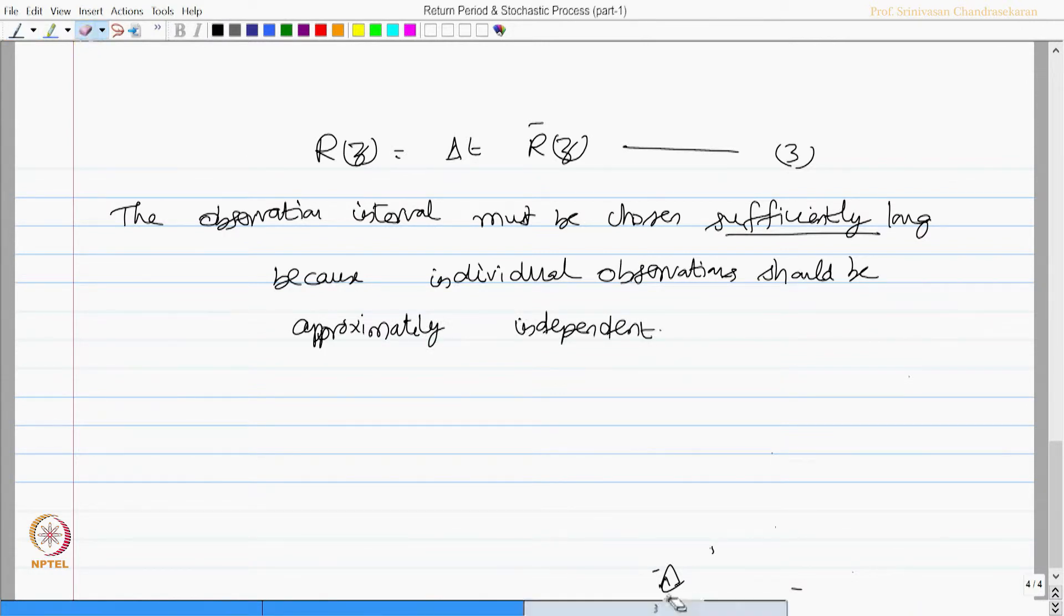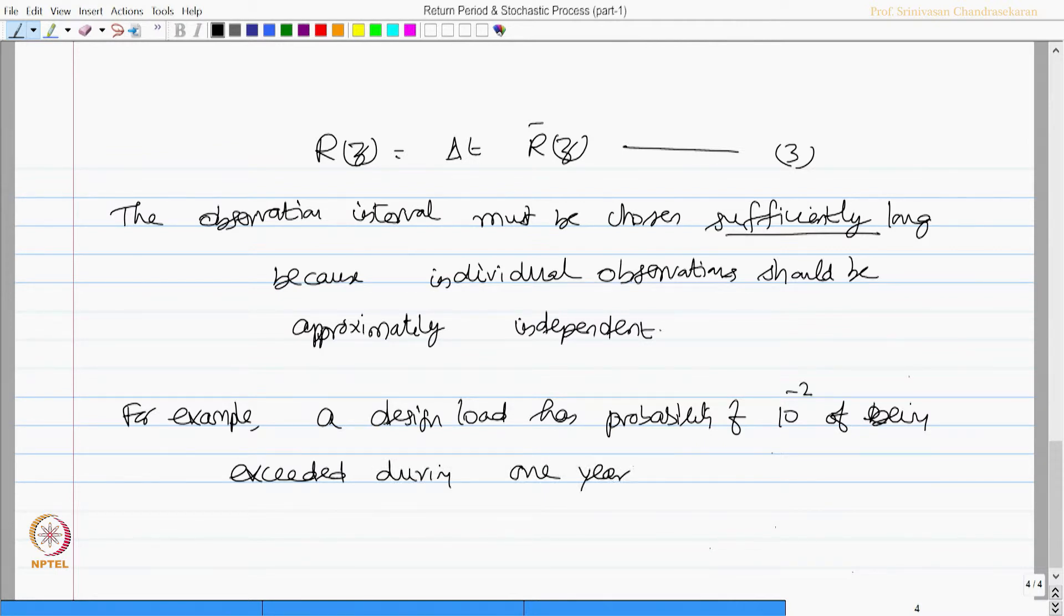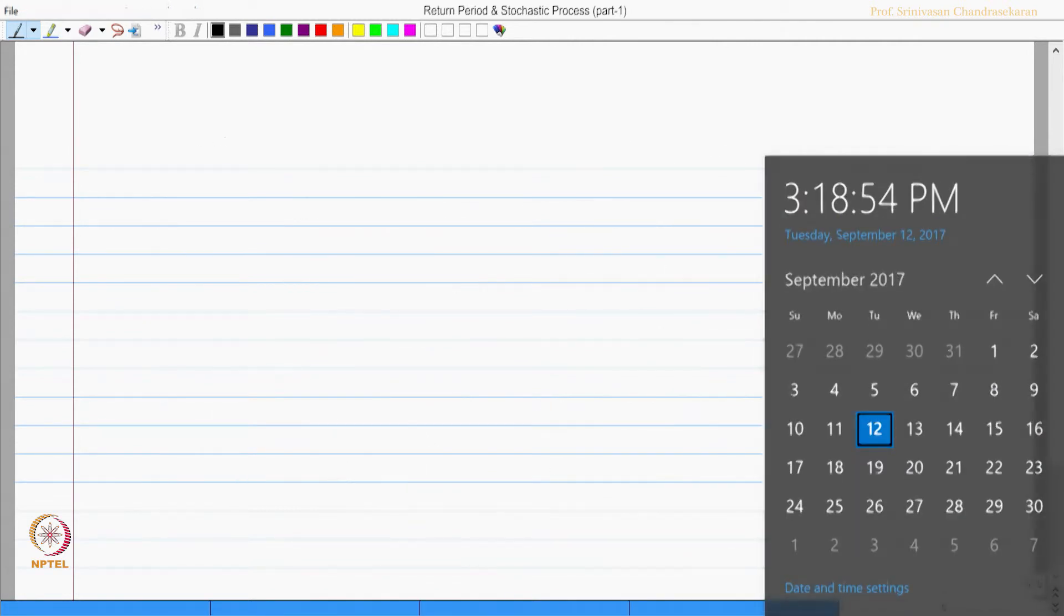Let us apply this for an example case and see what happens. Let us take for example, a design load has probability of 10 power minus 2 of being exceeded during 1 year.